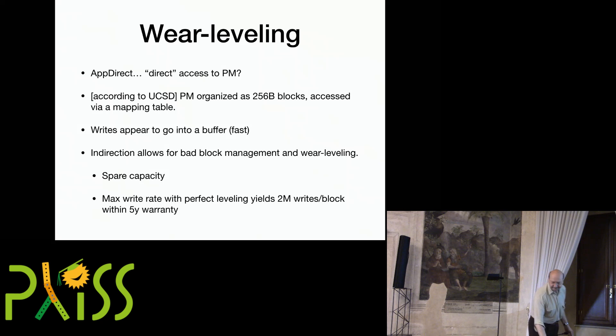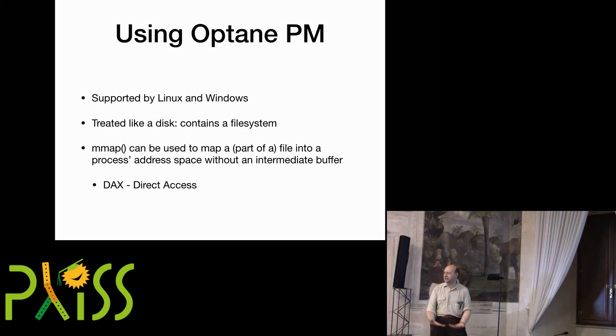When you do the arithmetic — look at the fastest you could possibly write to this and do that for five years — it's way shorter than 10⁸ writes per location, because the thing is so physically big that once you spread writes over it, you can't hammer on any individual location enough times to cause it to fail. There's also spare capacity on the board that gets mapped in when something fails. The writes go into a buffer when you write, so the write latency is low, but it's buffered.